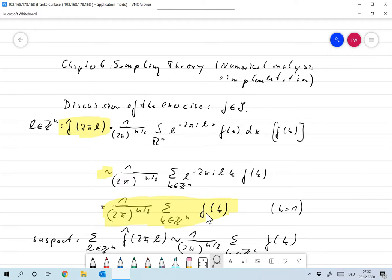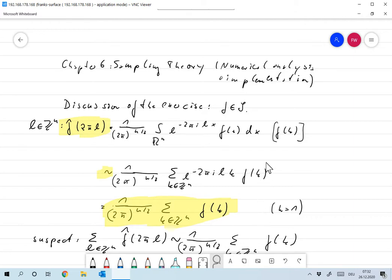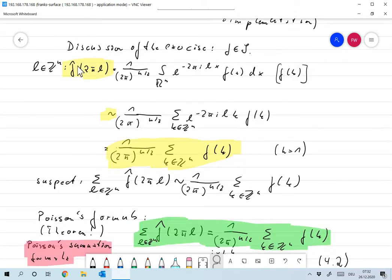And now something strange happened because we have an L on the left-hand side, but we do not have that L on the right-hand side. So that means for every L, we get the same approximation here. And that was the result of the exercise. And we already suspected that we're not really computing an approximation to F hat of 2πL, but that we are summing up all the contributions. So it's something like the sum over all L F hat of 2πL. That's really what this sum over here approximates.